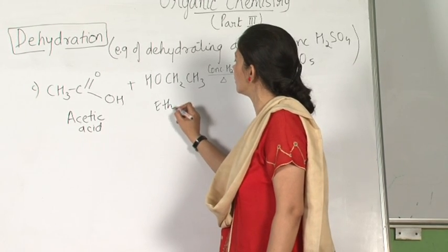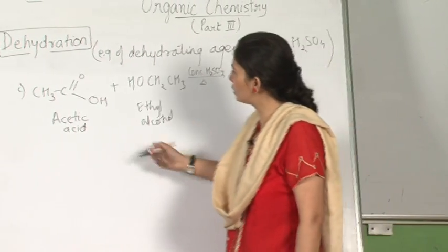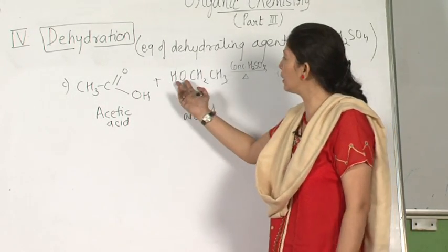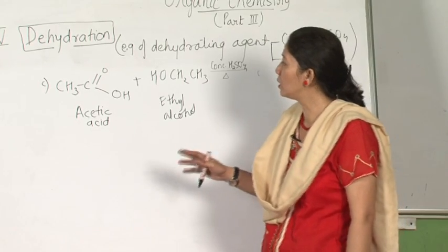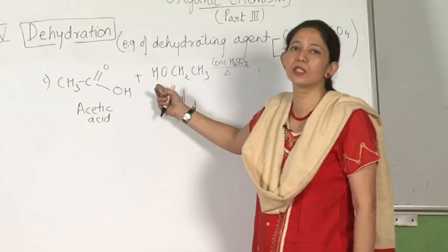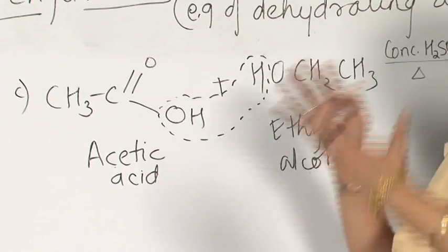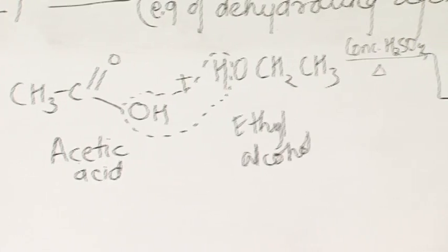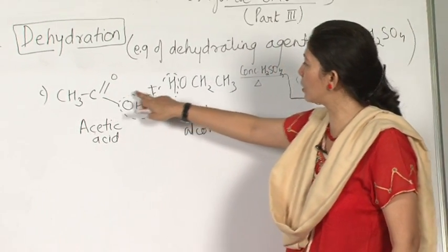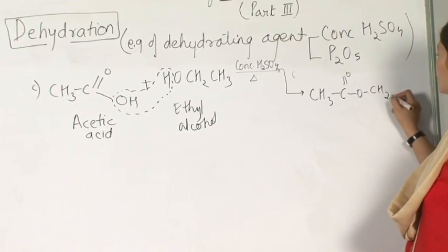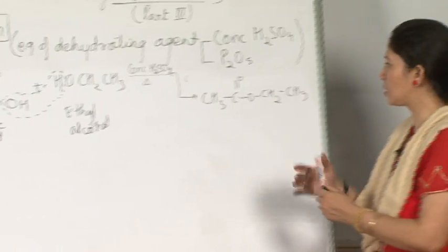This is for dehydration — remove water. When I remove water, I can either take the OH from the carboxylic acid and the H from the alcohol. With the help of a radioactivity experiment, it has been found that the OH part is removed from the carboxylic acid and hydrogen is removed from the alcohol. Taking this OH and this hydrogen — whatever is left, just combine it. This gives CH3, C double bond O, then oxygen, then CH2, CH3 — and thus you can make out that this is an ester.